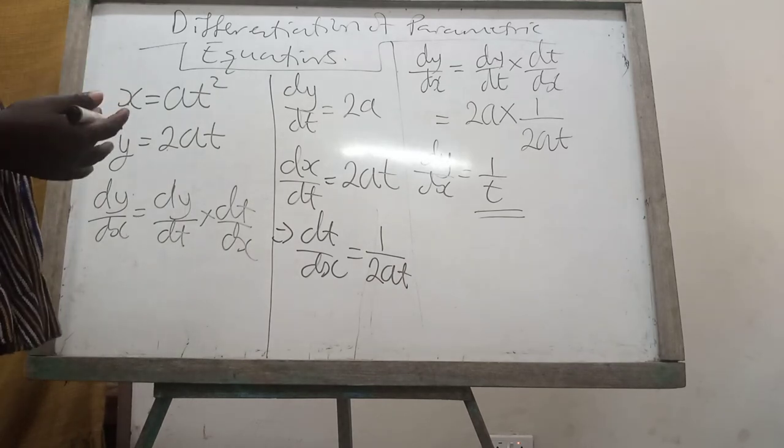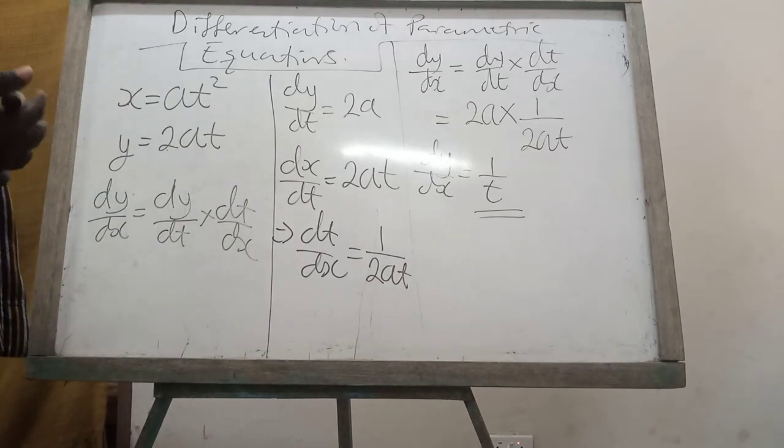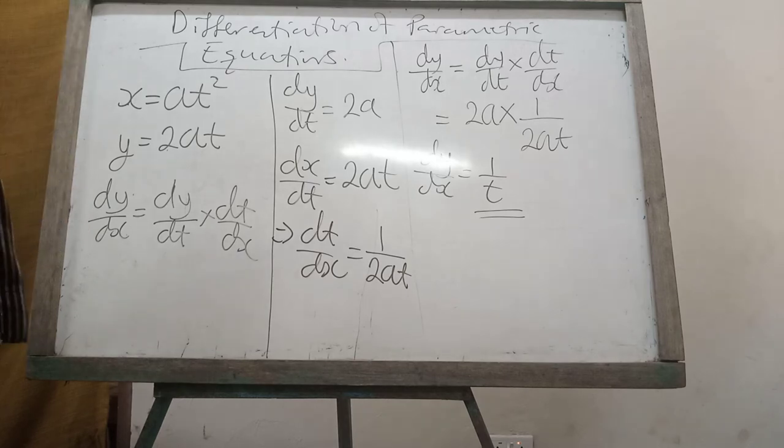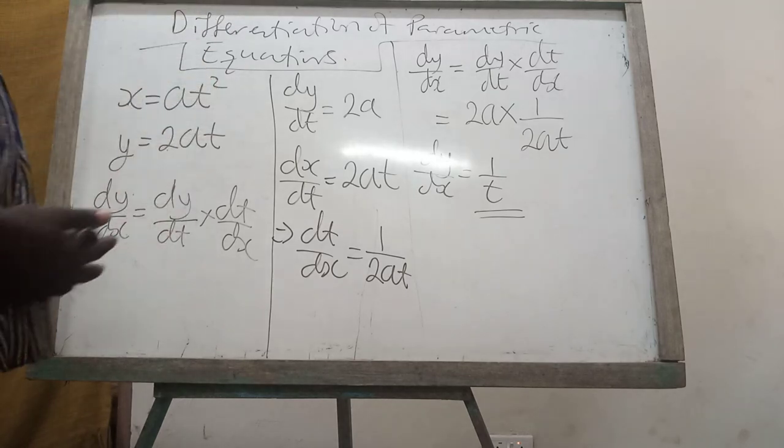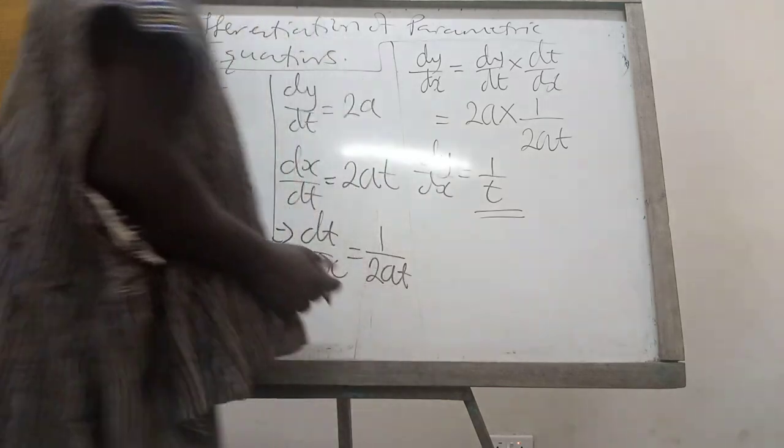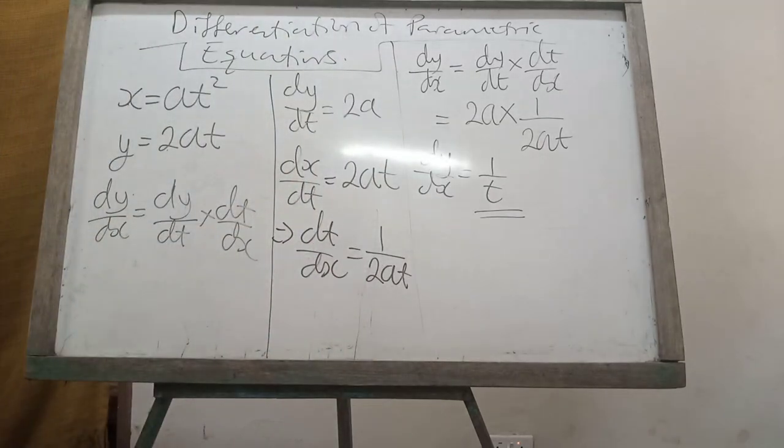In this case, if you were asked to find the gradient, if x is something, y is something or if t is something, then you replace the t by its value. I want us to be sure of this and it's very simple. Thank you very much.